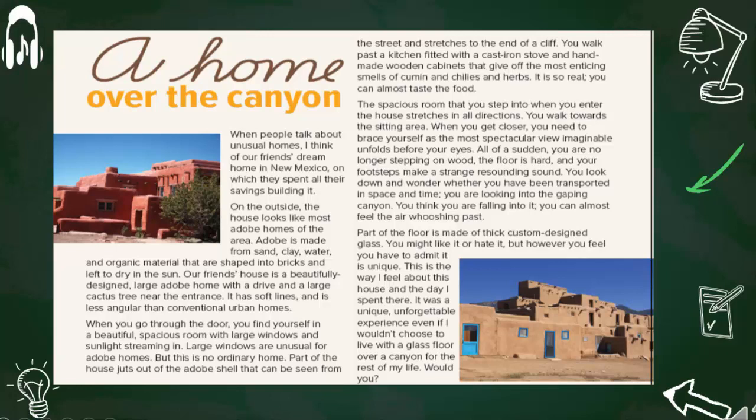Large windows are unusual for adobe homes, but this is no ordinary home. Part of the house juts out of the adobe shell that can be seen from the street and stretches to the end of a cliff. You walk past a kitchen fitted with a cast iron stove and handmade wooden cabinets that give off the most enticing smells of cumin and chilies and herbs — it is so real, you can almost taste the food. The spacious room stretches in all directions. You walk towards the sitting area, and the most spectacular view imaginable unfolds before your eyes. All of a sudden, you are no longer stepping on wood — the floor is hard and your footsteps make a strange, resounding sound.